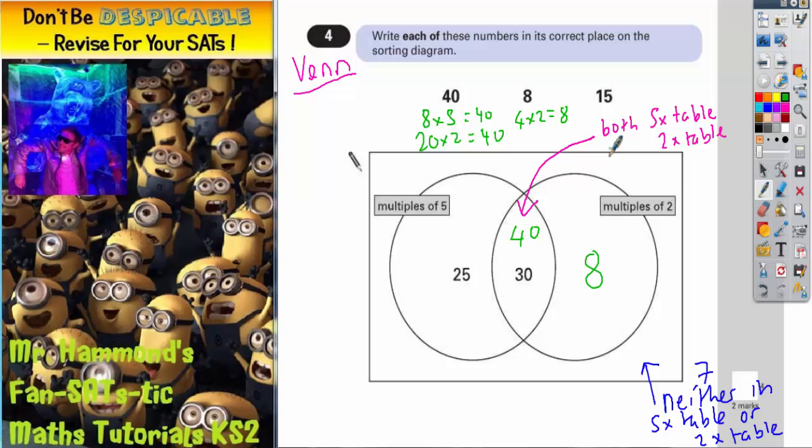The number 15. Is it a multiple of 5? Yes it is because 5 times 3 equals 15. And is it in the 2 times table? Well no it isn't because it's not an even number. It's an odd number. Therefore the only one it can go in is a multiple of 5. But it can't go in the overlapping bit because it's not even. So 15 has to go on this side.